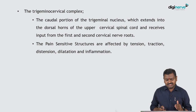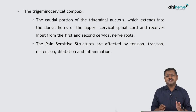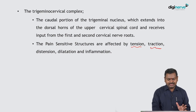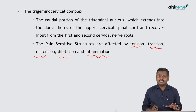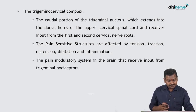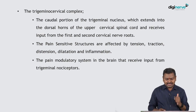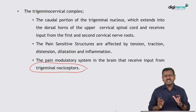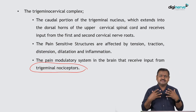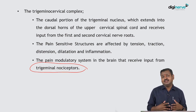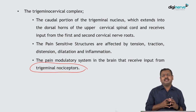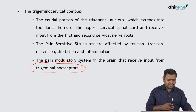Pain-sensitive structures are affected by tension, traction, distension, dilatation, and inflammation. Anything causing these changes to any of the listed pain-sensitive structures can result in pain. Pain modulation is primarily through trigeminal nociceptors — the trigeminal nerve and its branches have been widely studied, and all primary headache pain mechanisms are related primarily to trigeminal nociceptors.